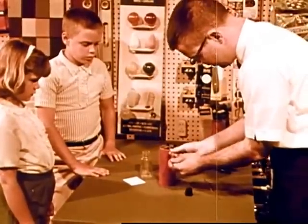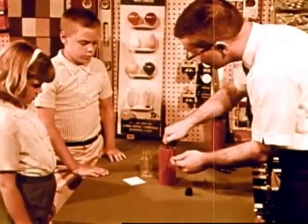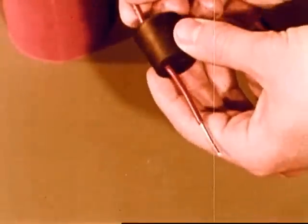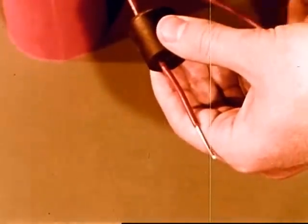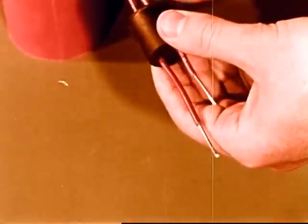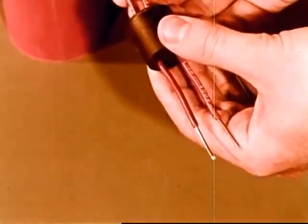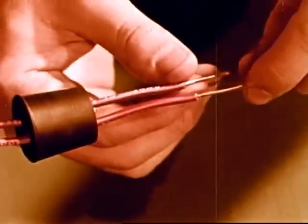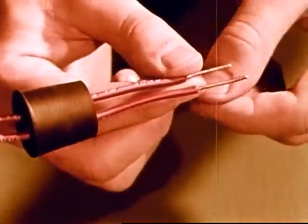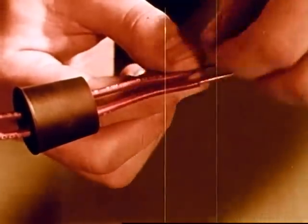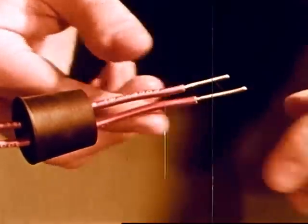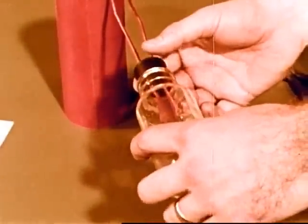But how does electricity make light? Mr. Grant is going to show them using another battery and other wires. He has passed two wires from the battery through a rubber stopper. Now he connects the wires together with another kind of wire that is very thin.